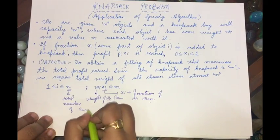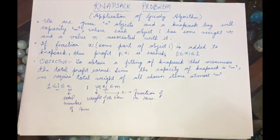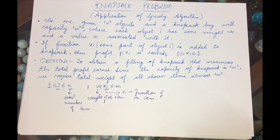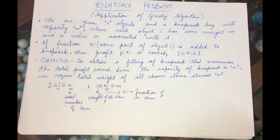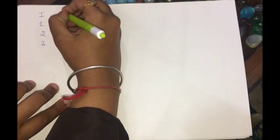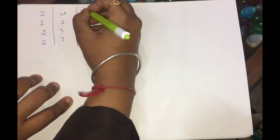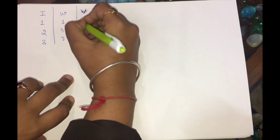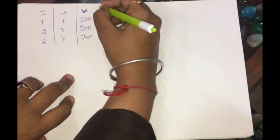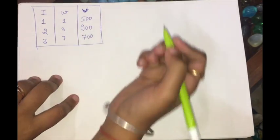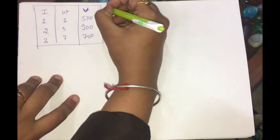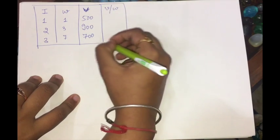We are now going to solve a worked example for the knapsack problem. Suppose I have three items — 1, 2, and 3 — with weights 1, 3, and 7 respectively, and values 500, 900, and 700 respectively. The size of the knapsack m is 5.